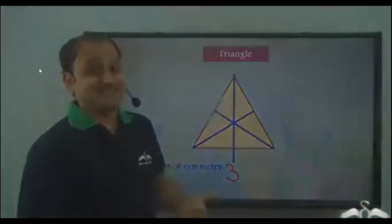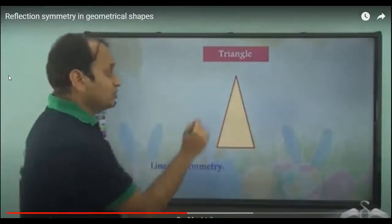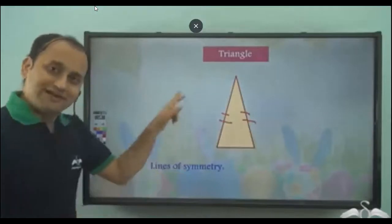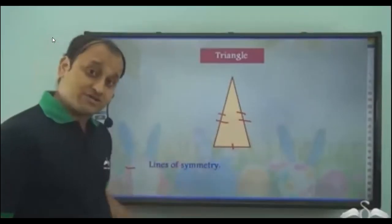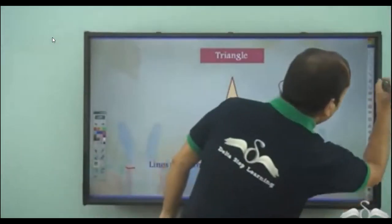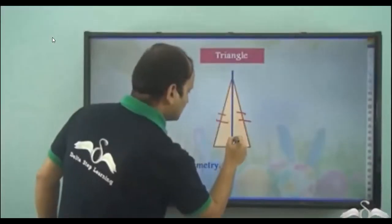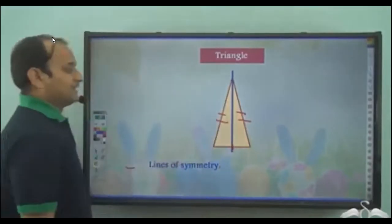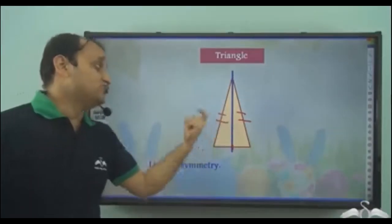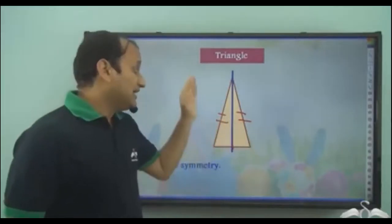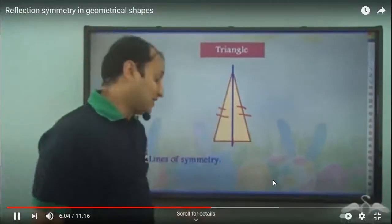Let's see different kinds of triangles. I have a triangle in which two sides are of the same length while the third is different. In this case, the only line which will divide this triangle into two mirror halves gives us one line of symmetry. So in this type of triangle where two sides are of the same length, we have only one line of symmetry.